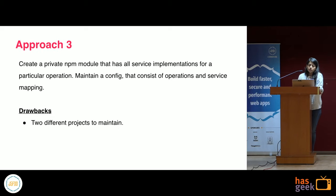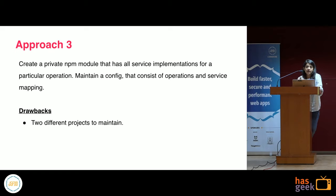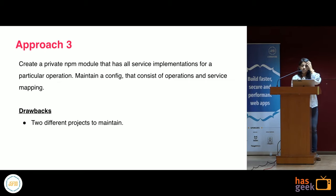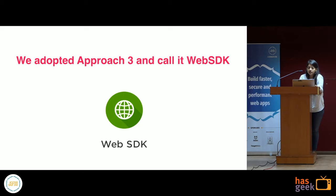Approach three was to have a private NPM repository. We keep all API implementations separate in a service layer, the view layer is separate, and there is a config in between. The config maps all web operations — those dependent on backend data — to a provider code. Whenever web wants to do any operation, it refers to the config to find which provider is mapped, then calls that provider's API. Most problems are solved here, though we have one repository for API implementations, one for config, and one for the view layer. We went with approach three and call it web SDK today.